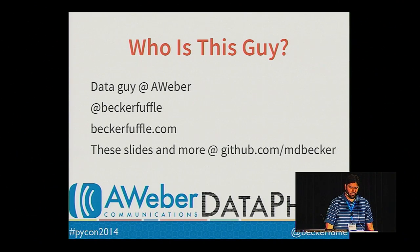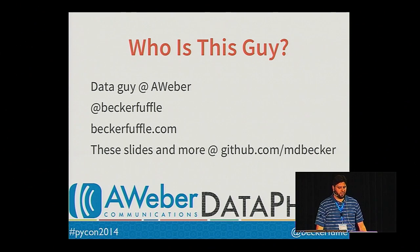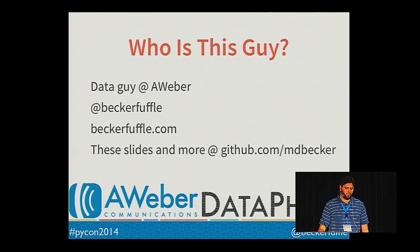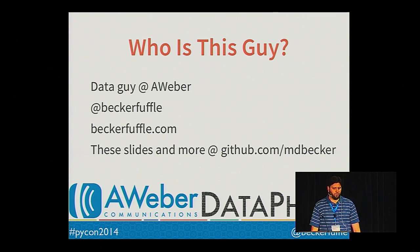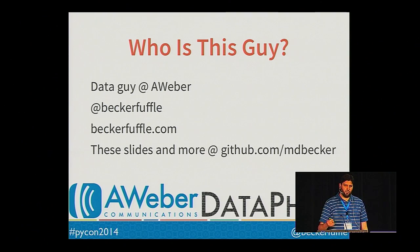Thanks for coming out. My name is Michael Becker. I work for the Data Analysis and Management Ninjas at AWeber. AWeber is an email service provider located just outside of Philadelphia with over 120,000 customers.